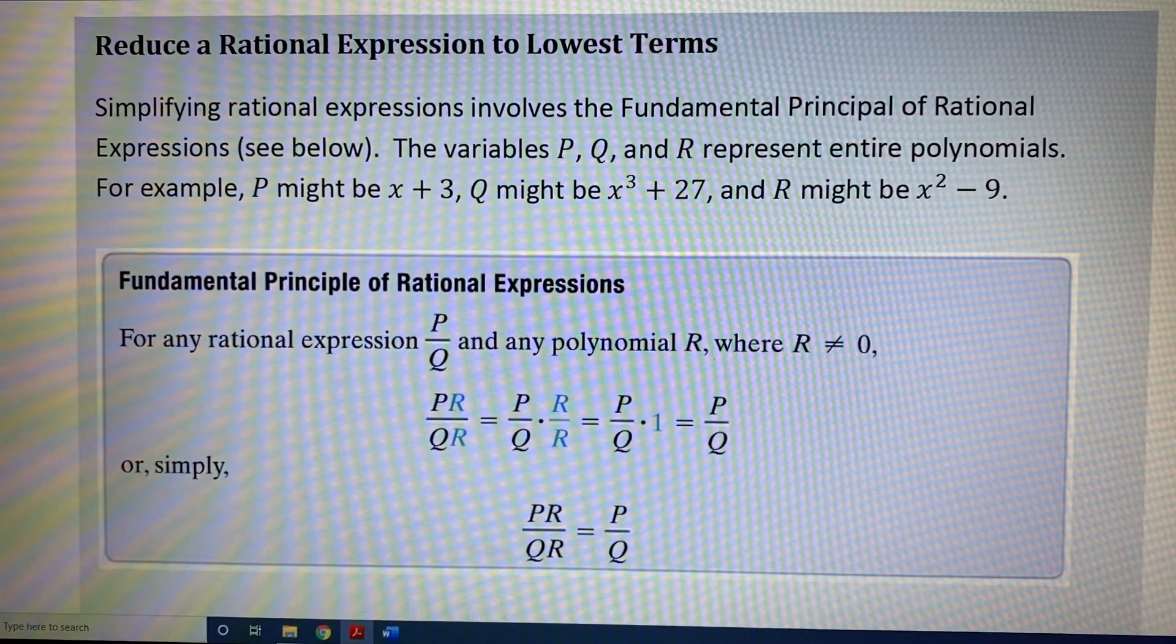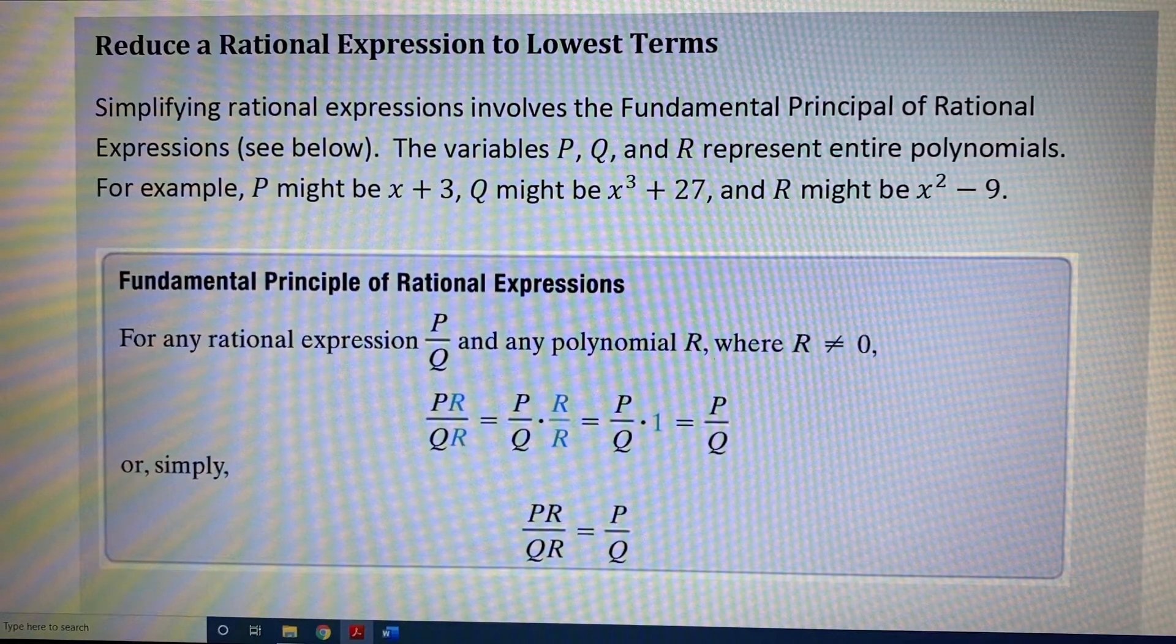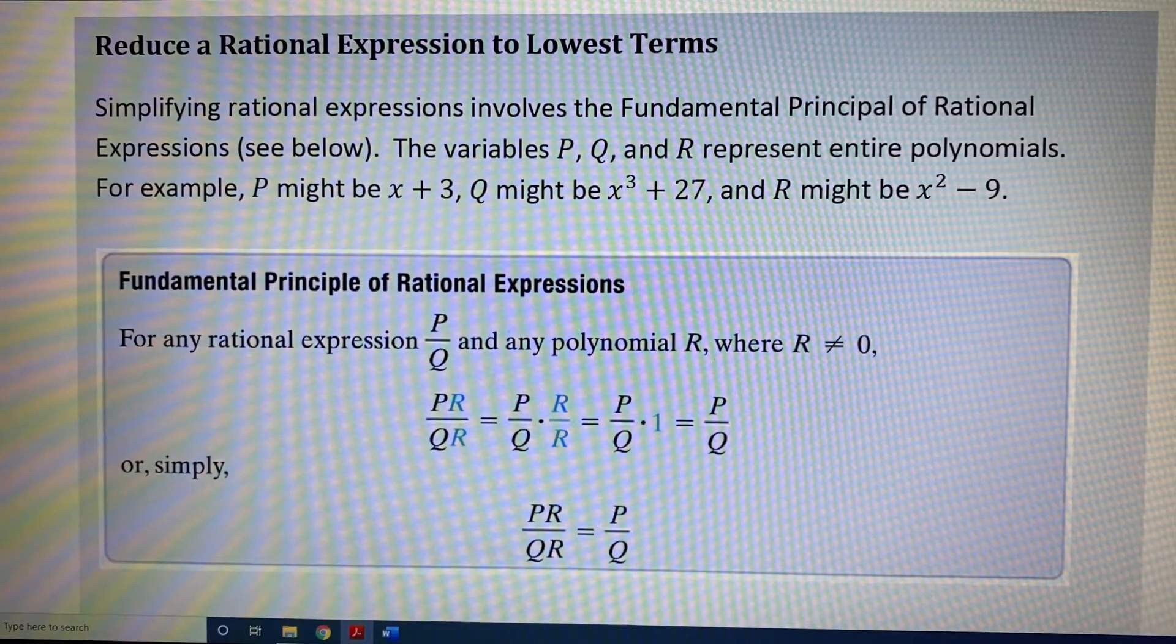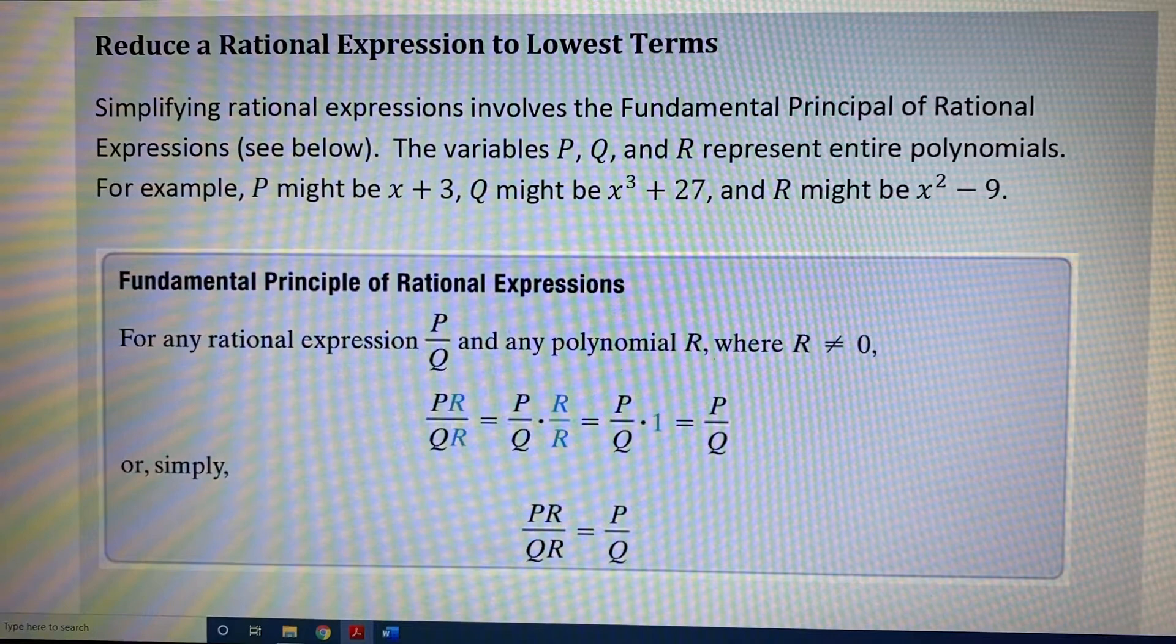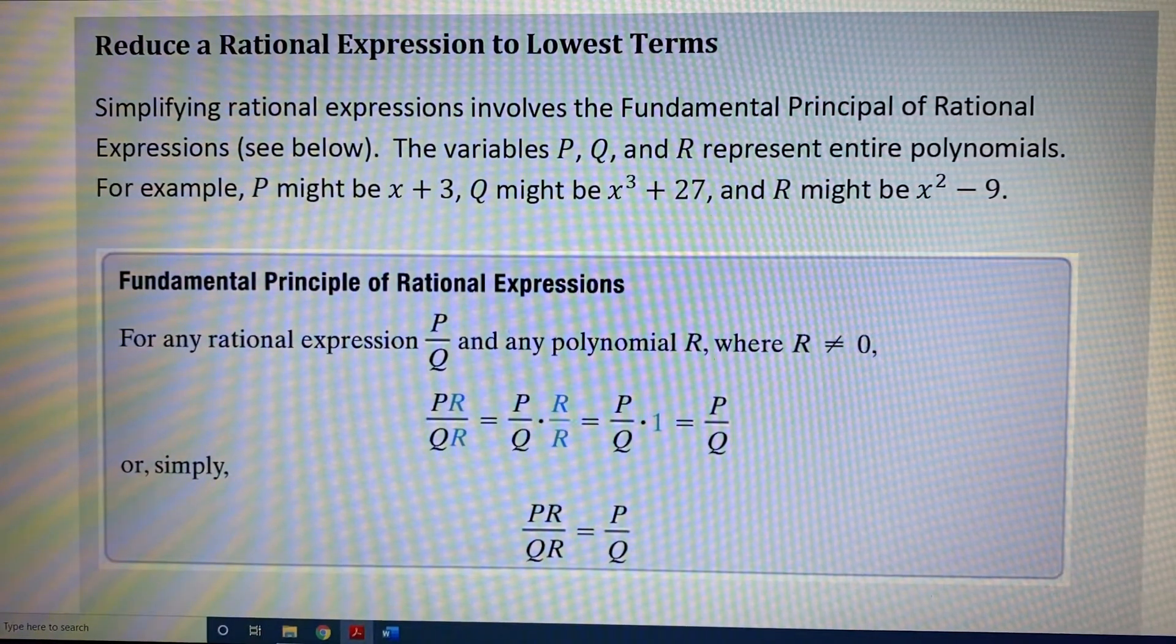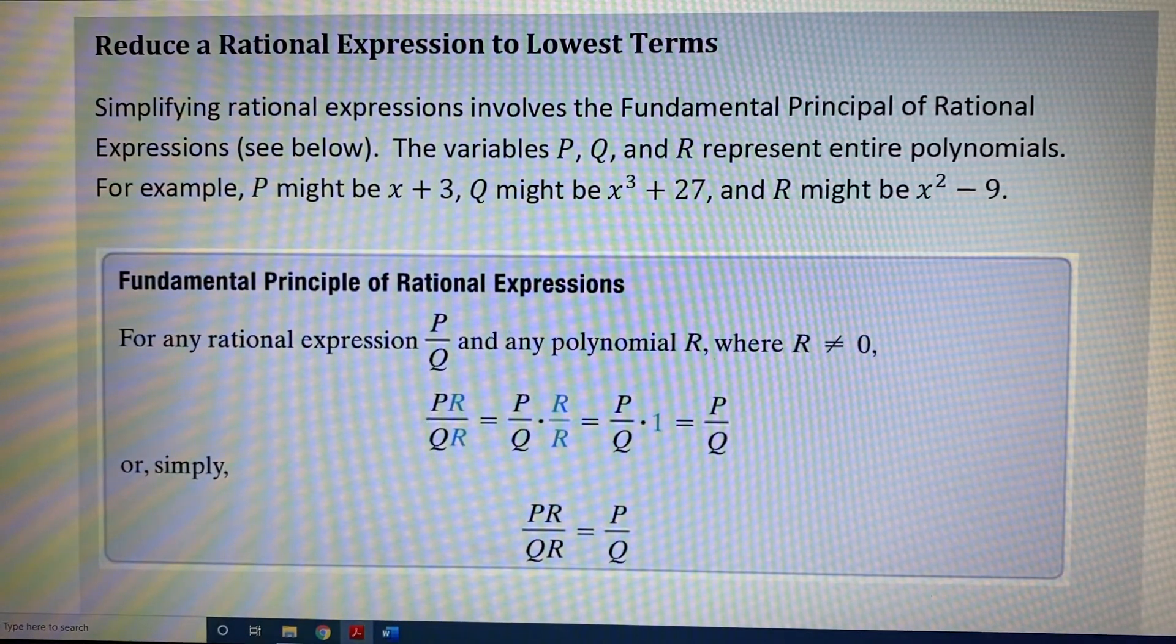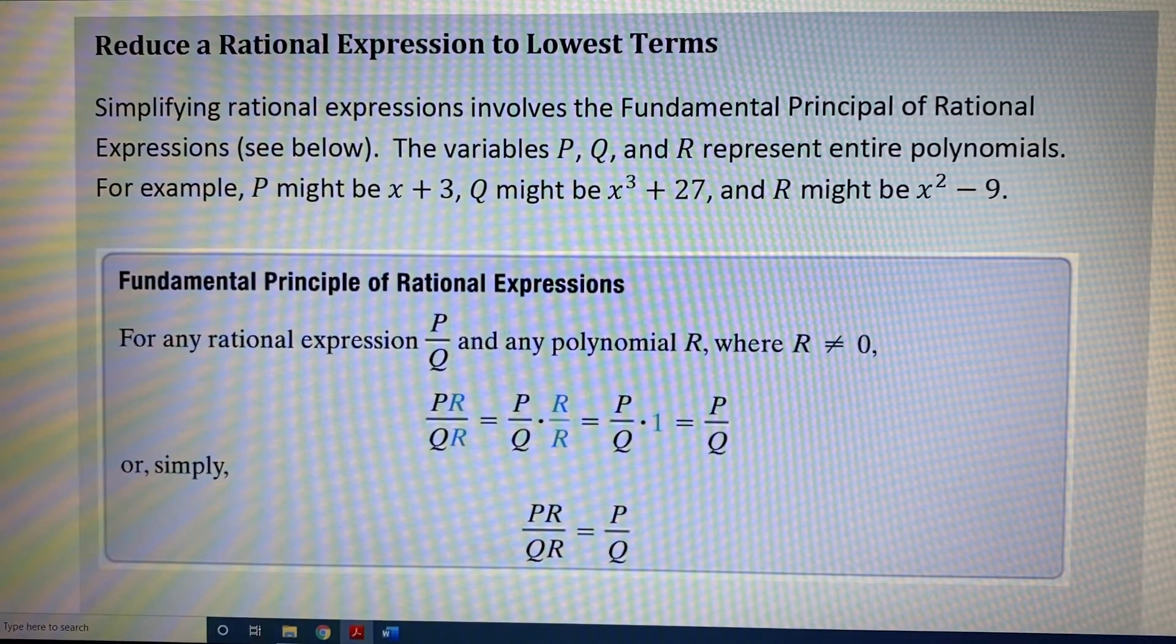Fundamental principle of rational expressions. For any rational expression P over Q, and any polynomial R where R is not equal to 0, PR divided by QR is equal to P over Q times R over R, equals P over Q times 1, equals P over Q. Or simply, PR over QR equals P over Q.